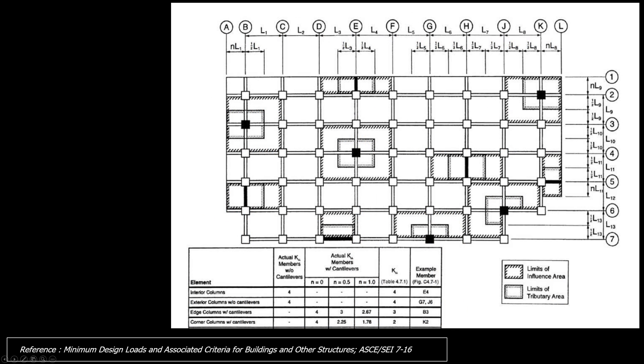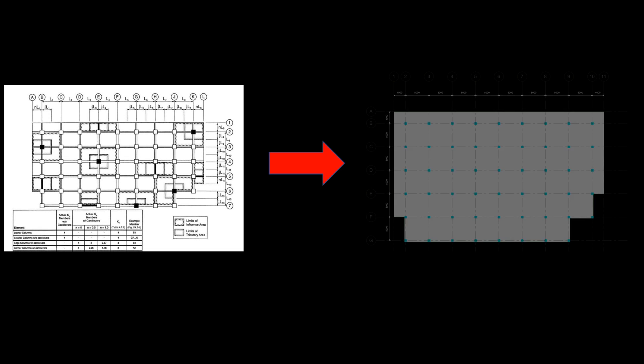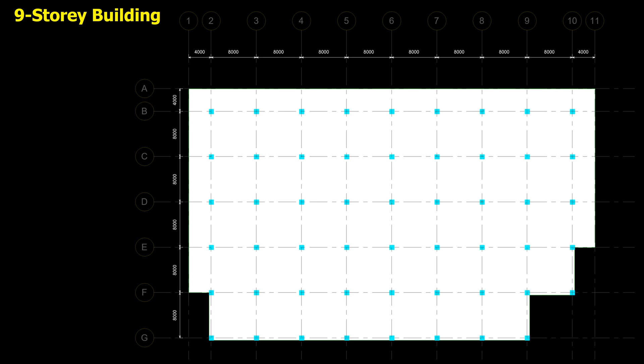This figure shows the definition of the influence area for the interior column, edge column, and corner column. Now let's take some examples to demonstrate the calculation of the influence area, by creating a framing plan for a nine-story building, where manual calculations will be compared with ETABS's automatic live load reduction factor.